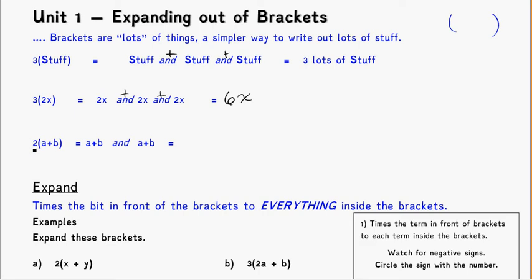If I've got two lots of a plus b — so that's two bracket a plus b — that means I've got an a plus b and another a plus b. Two piles of them, so I could add them together. Well, a plus a as like terms becomes two a, and b plus b as like terms becomes two b. I can write them all out and then add up like terms. But another way is to look back at the original setup with the brackets: take that two in front and times it through. That means I've got two times the a's — two a — and two times the b's — two b. That gets me there without having to write them all out individually.